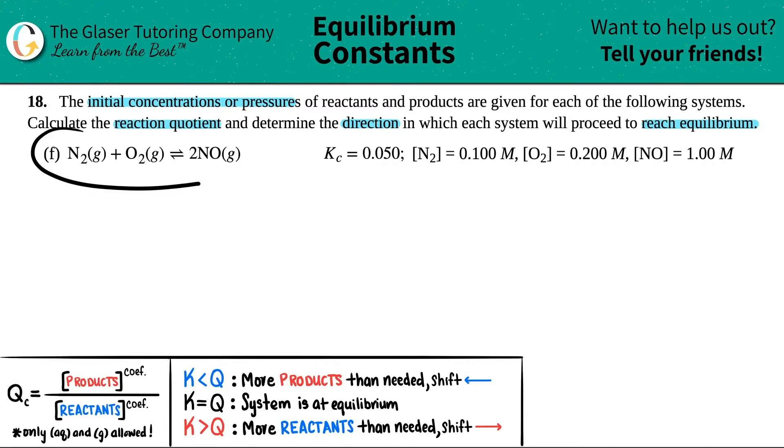Then we have letter F. Now I see that we have a balanced equation here. I see that we have a 2 coefficient, so I'm going to assume this is balanced. So what I'm going to do is I'm going to just write the formula a little bit bigger so that we can work with it. So we got nitrogen gas plus oxygen gas. When these come together and go to equilibrium, we get 2NO gas.